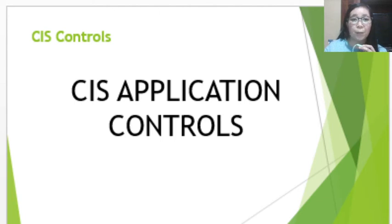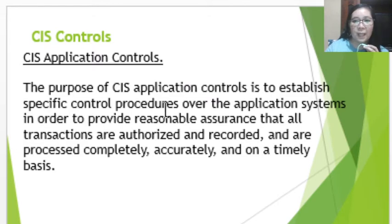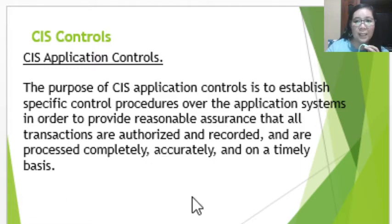To continue with our CIS controls, we are now in the second part: CIS application controls. These are specific controls over the accounting application. The purpose of CIS application controls is to establish specific control procedures over the application systems so that they can provide reasonable assurance that all transactions are authorized, recorded, and processed completely, accurately, and on a timely basis. CIS application controls that relate to financial reporting purposes are the concern of the auditor.